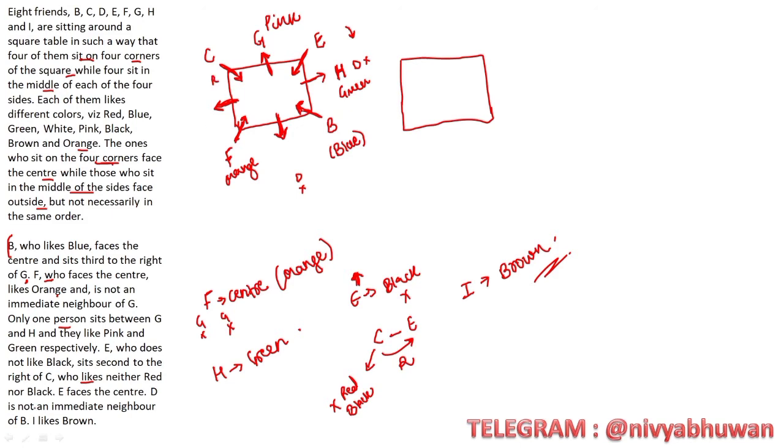That means if we have C and E, if we exchange their positions, then it will become our correct position. If I keep E and C here, then it will be in the second right. Yes, we are done.